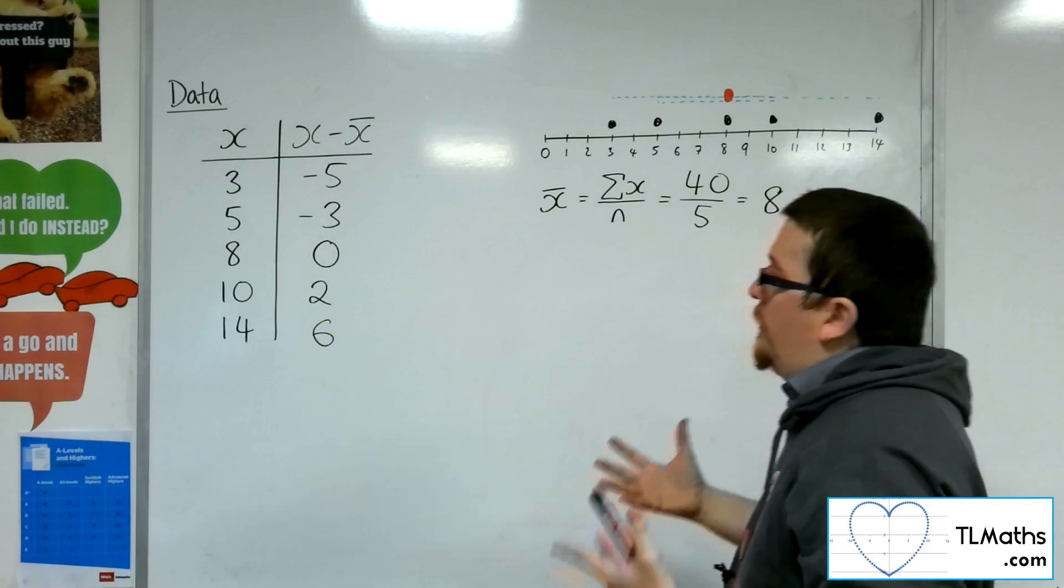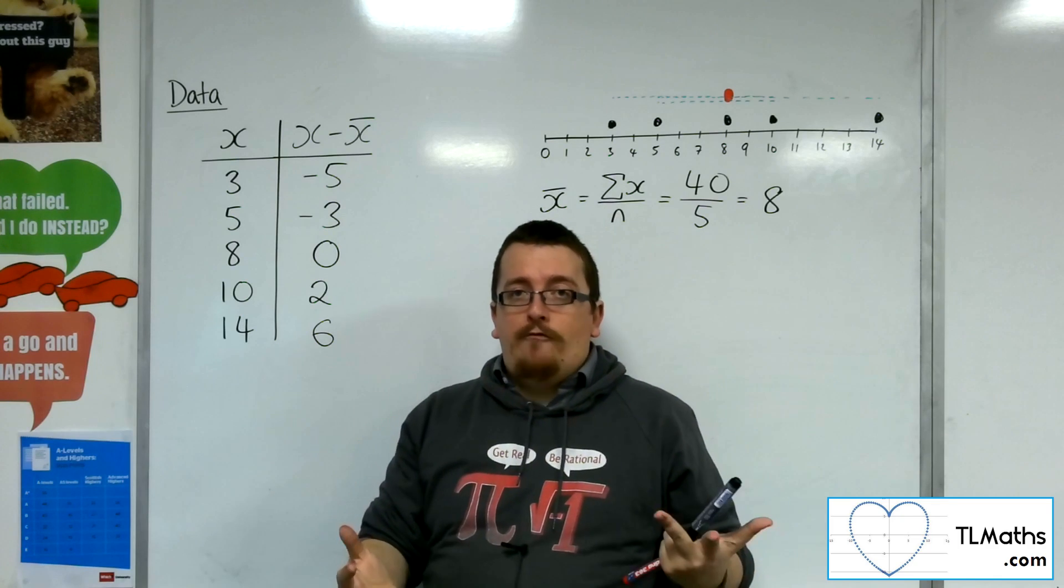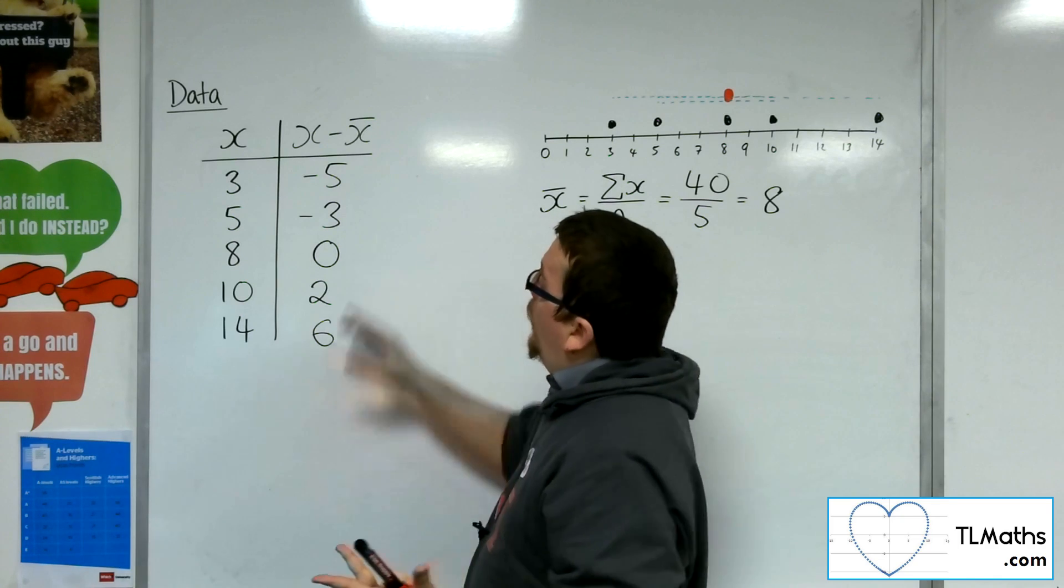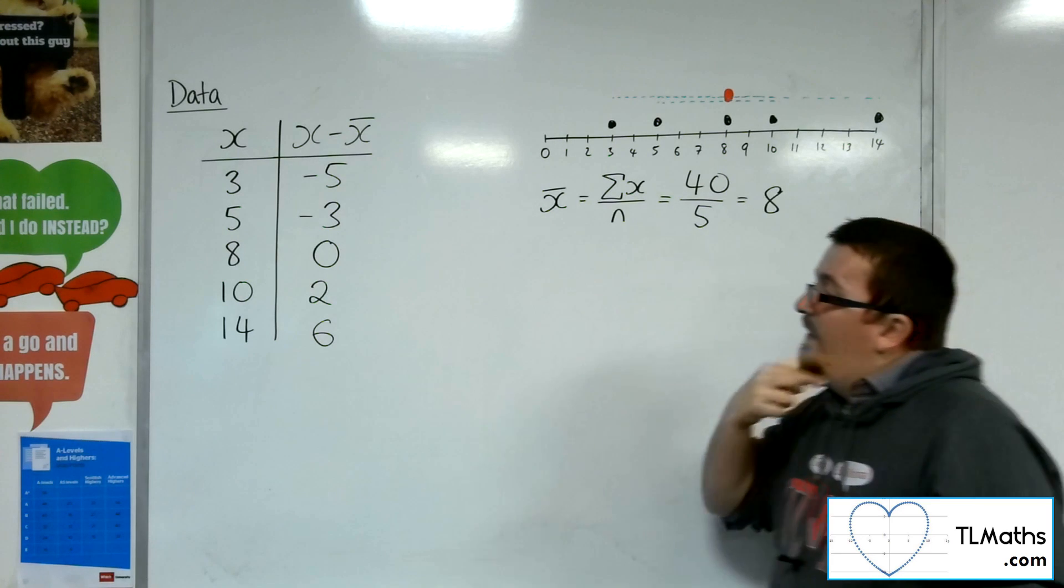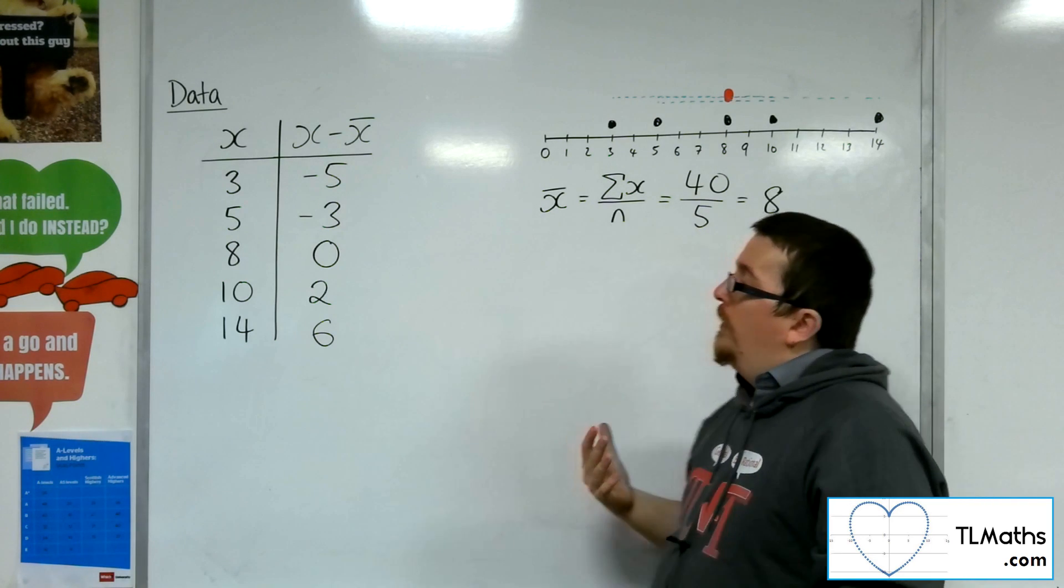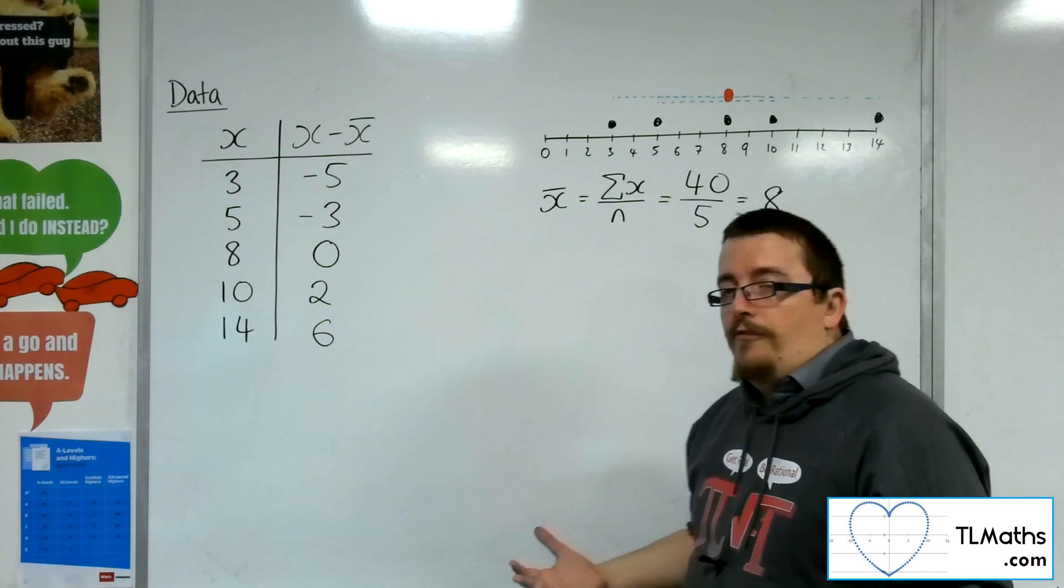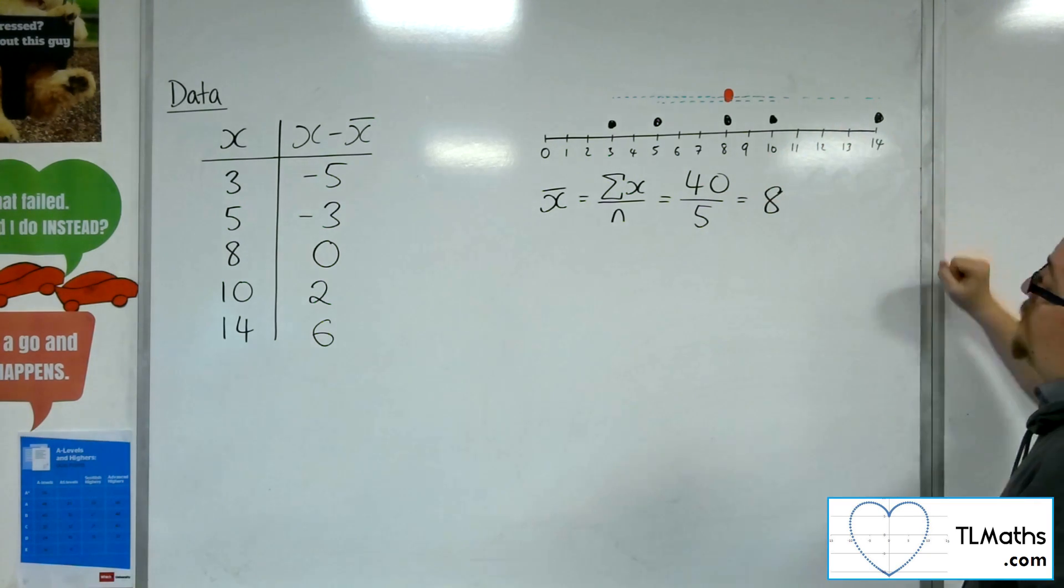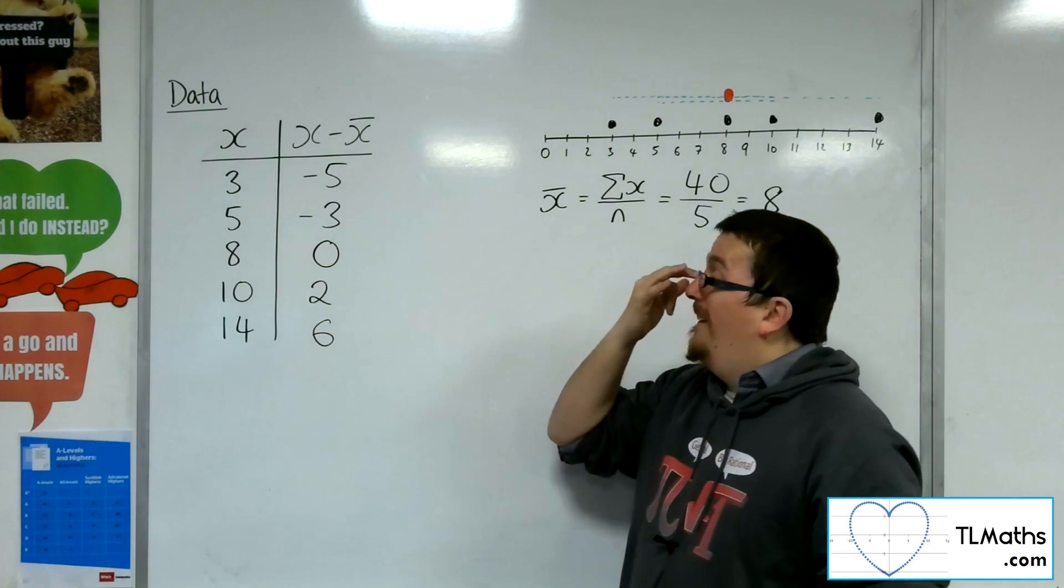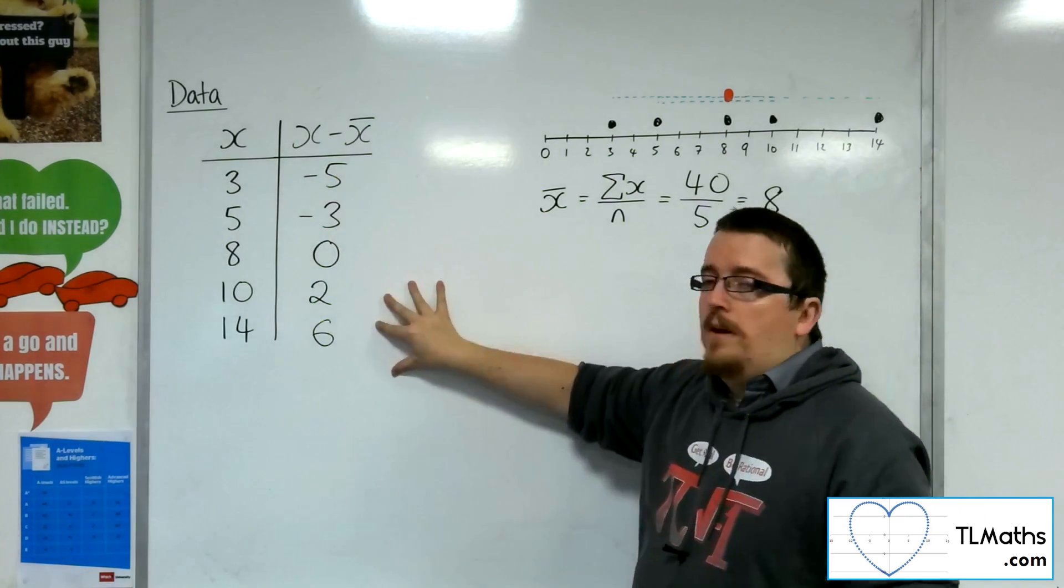Now, if I was then to think, right, they're the distances, let's find the average of those numbers. Well, if I try and find the average of those 5 numbers, they'll all add up to 0. And then 0 divided by 5 is 0. So I wouldn't really have found much. Clearly, these data points aren't 0 on average away from the mean.